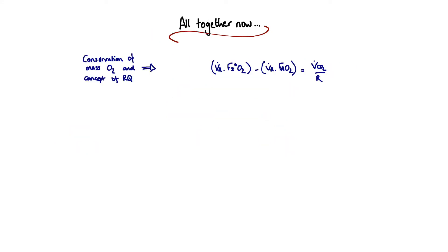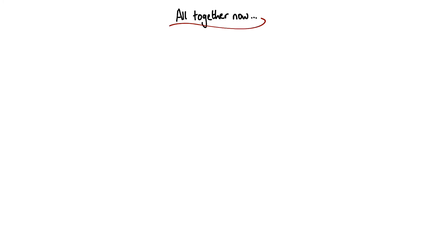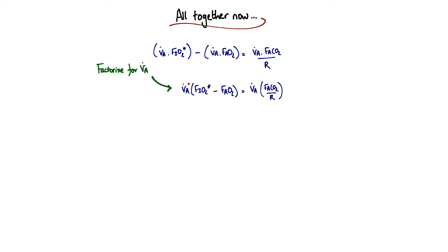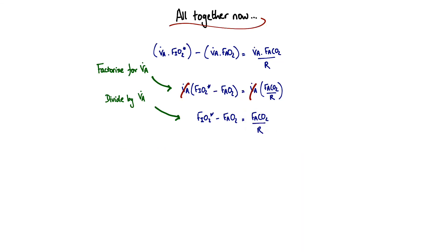We can now start to bring this together. From our conservation of mass for oxygen and the respiratory quotient argument, we have one term; and from our conservation of mass for CO2 and Dalton's law, we have another. We substitute V dot CO2 into the top equation and begin the derivation. After substitution, we factorise for V dot A as it's common throughout, and the V dot A terms cancel on both sides. We then substitute in the fractional concentrations for O2 and CO2 from Dalton's law — partial pressure divided by alveolar total pressure — to give us a revised equation.